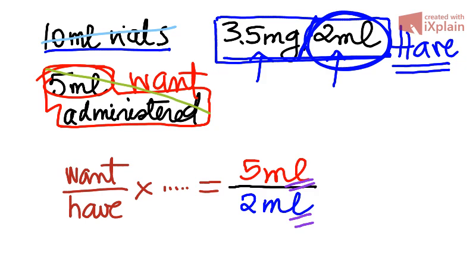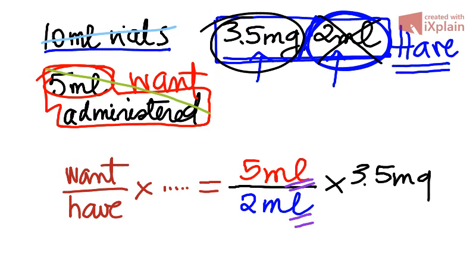And then, once the 2 ml is used, we multiply by what comes in - the third number, which is the 3.5 mg. Just making sure we visualize that ml are matching and we can cancel or ignore them.